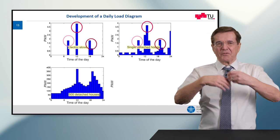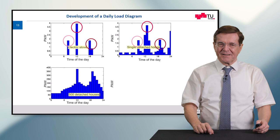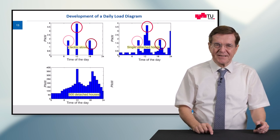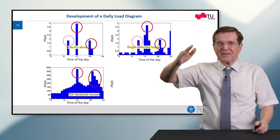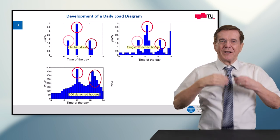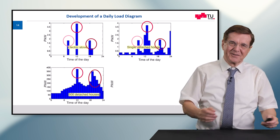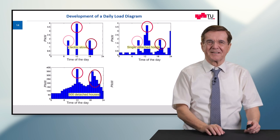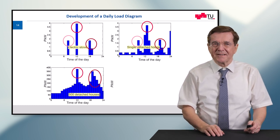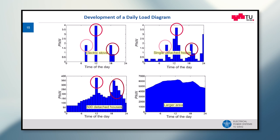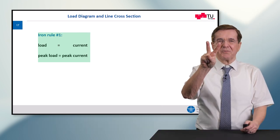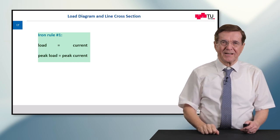When we go from one household to a little settlement of say 500 detached houses, we again see the lunch peak, the evening peak, and we see that in the evening power consumption goes down as people go to bed. This pattern holds even for a larger area — a city of a few hundred thousand people — where we again see the lunch peak and the evening peak.